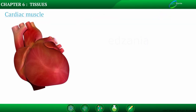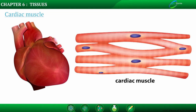Cardiac muscles show rhythmic contraction and relaxation throughout life. They are involuntary muscles because we cannot start or stop them at will. The cells of cardiac muscles are cylindrical, branched, and uninucleate.